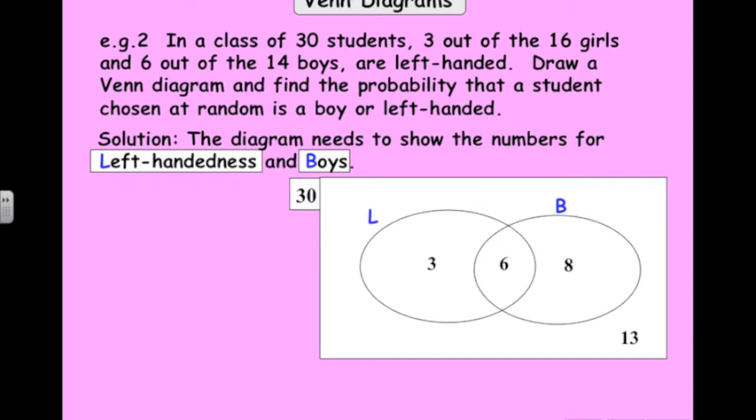Tricky. Now we can answer the question. What's the probability that a randomly chosen student is a boy or left-handed? So that means we're just adding up these three numbers here. So we've got 17 out of 30.